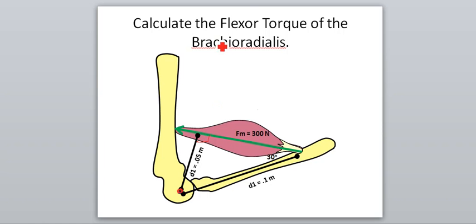So you could calculate this torque two ways. Torque is equal to 300 newtons times 0.05 meters, which is equal to 15 newton meters.